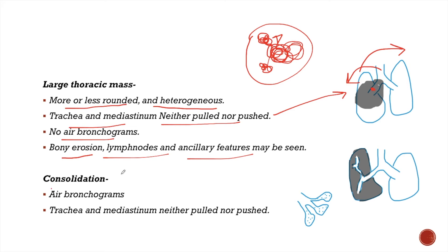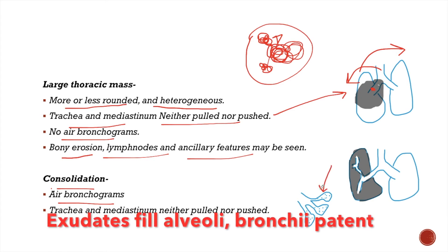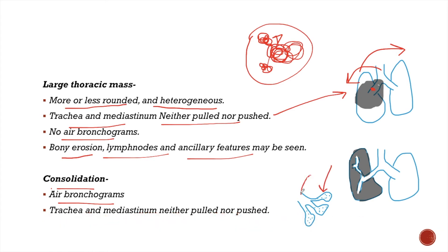Now, coming to consolidation. Consolidations are characterized by air bronchograms. In consolidation, exudate fills the alveoli while the bronchi are patent, so these appear as air bronchograms in the chest X-ray. The mediastinum and trachea are central in location because there is no mass effect from the consolidation.